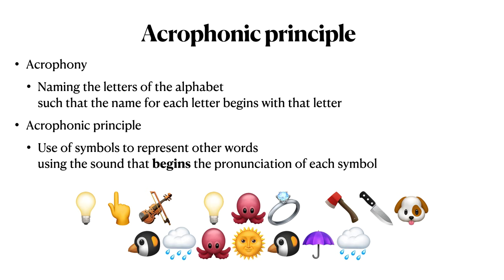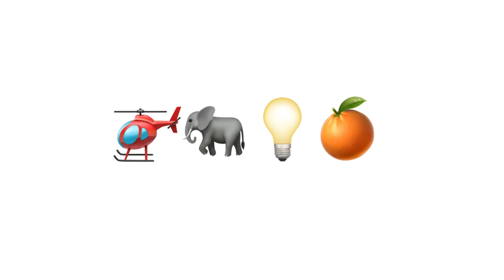Let's take a look at sounding out a word written in this alphabet. Recall that acrophony is the naming of the letters of an alphabet such that the name for each letter begins with that letter. The acrophonic principle is the use of symbols to represent other words using the sounds that begin the pronunciation of each symbol. Eventually we'll tackle the phrase written below, but first we're going to start with a simpler example. I'd like you to pause the video and see if you can sound out using our alphabet what this word says. It's a common word in English — pause now and see what you can come up with.